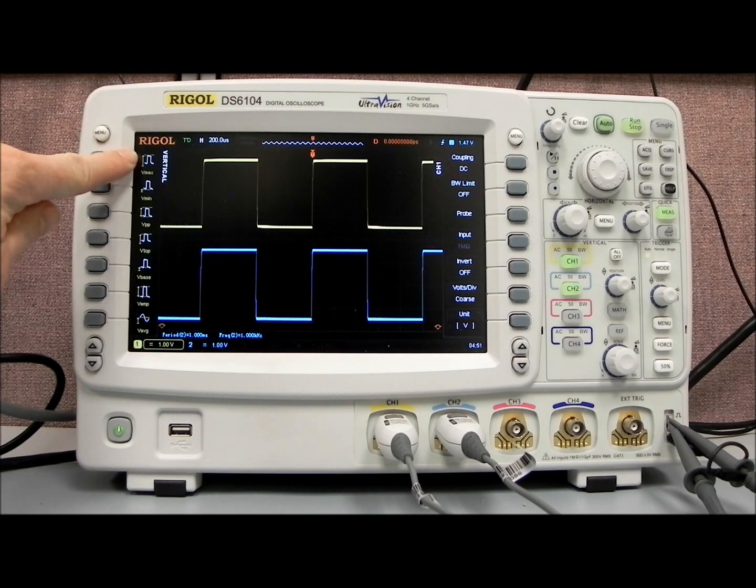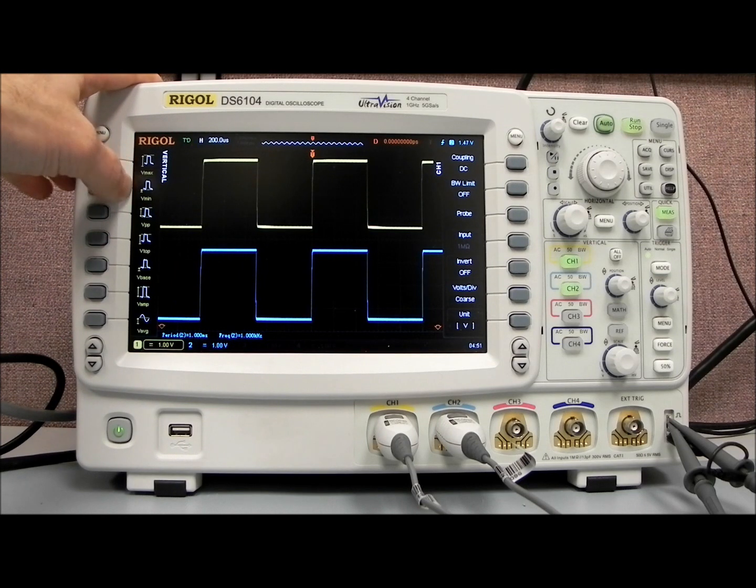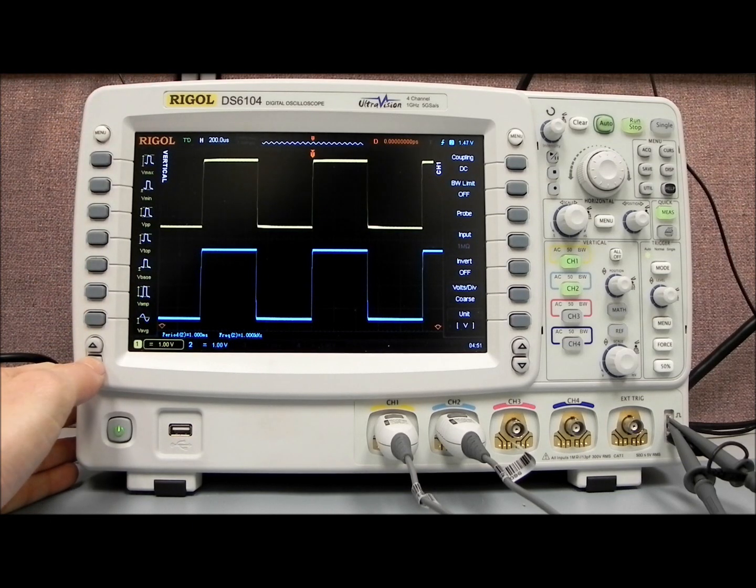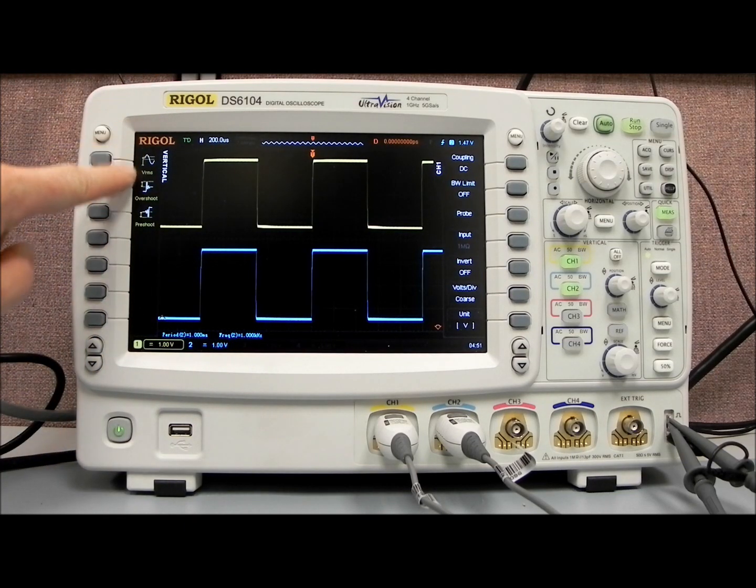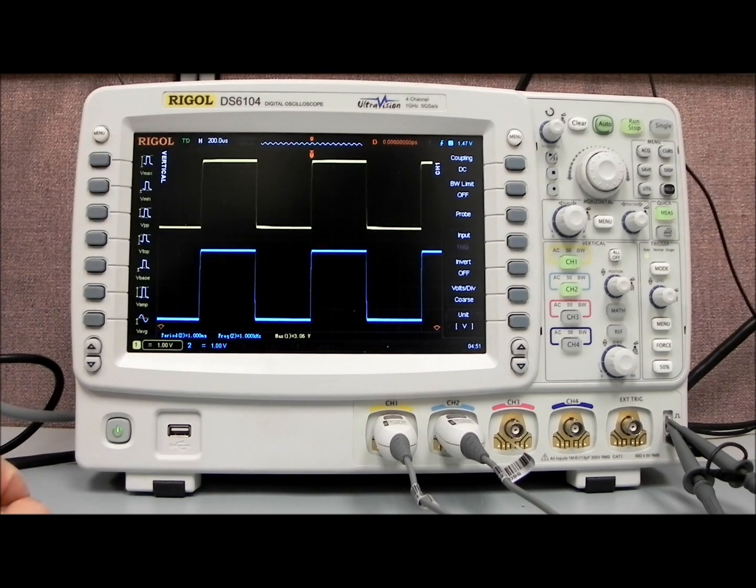What I'd really like to highlight is some of the quick measurements we have. If we press this menu key on the left-hand side, you'll see it says vertical currently. If we pull that out, now we have all of the vertical measurements that we have at our fingertips. We have max, min, peak-to-peak, top, v-base, v-amplitude, and v-average. If we down arrow, you can also see we have VRMS, overshoot, and preshoot.